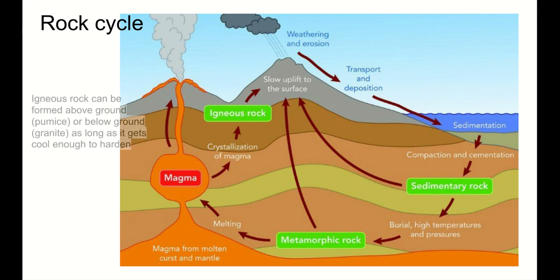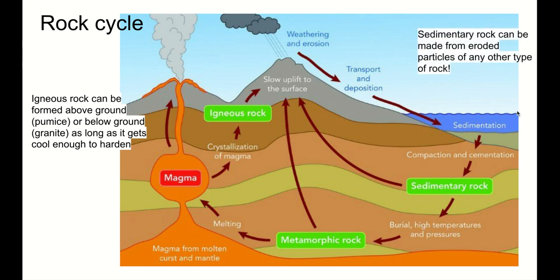Here are some extra facts. Igneous rock can be formed above ground, like rock formed when magma comes out of a volcano, or it can be formed below ground — it just needs to get cool enough to harden. If it gets extruded just below the surface where it's cool enough, it can still be igneous rock. Sedimentary rock, although the diagram shows it mostly made from eroded igneous rock, can be made from eroded particles of any other type of rock on the surface.